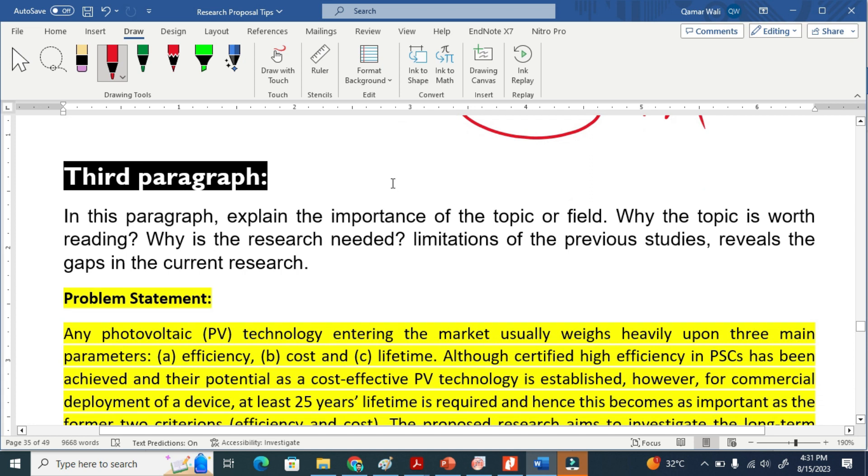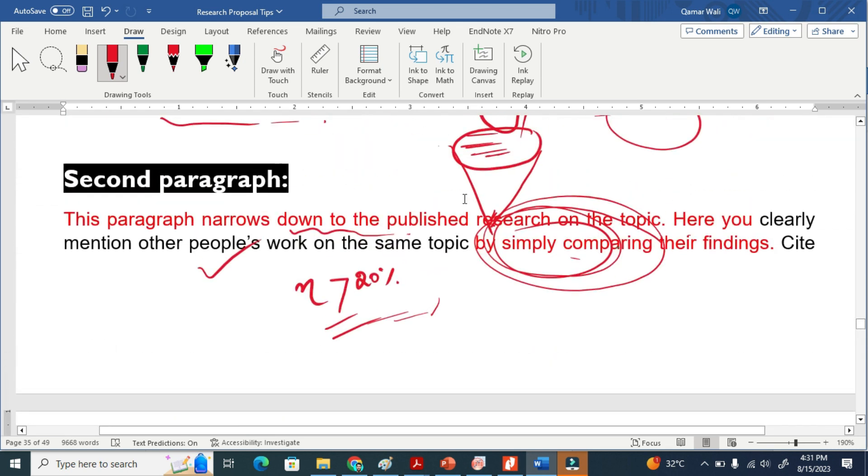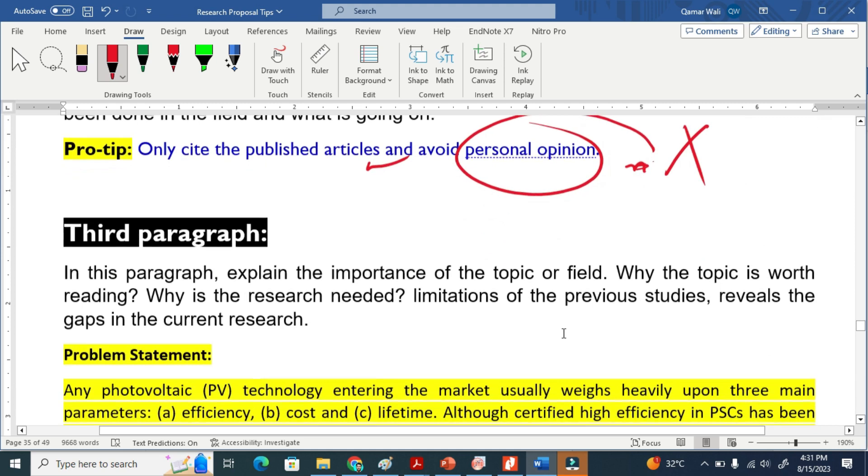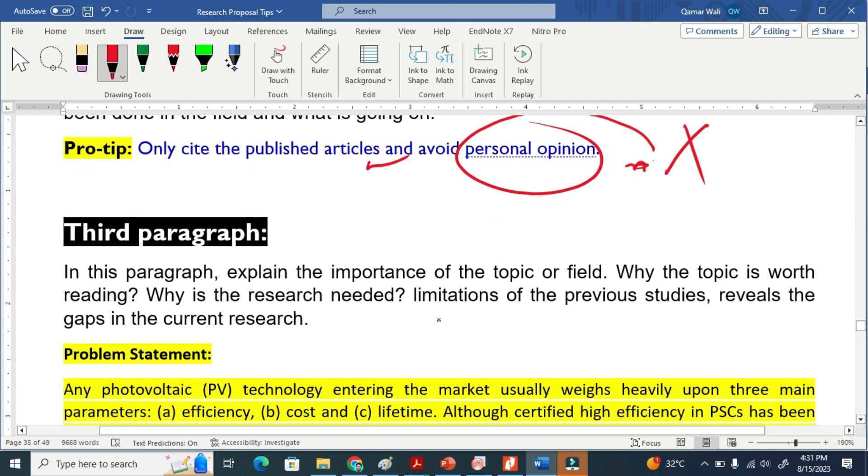Now, once we read the second paragraph, from there we will - because we are reading people's work - we will have the limitations in our head. So in the third paragraph, we have to explain the limitations of that, why the research is needed.